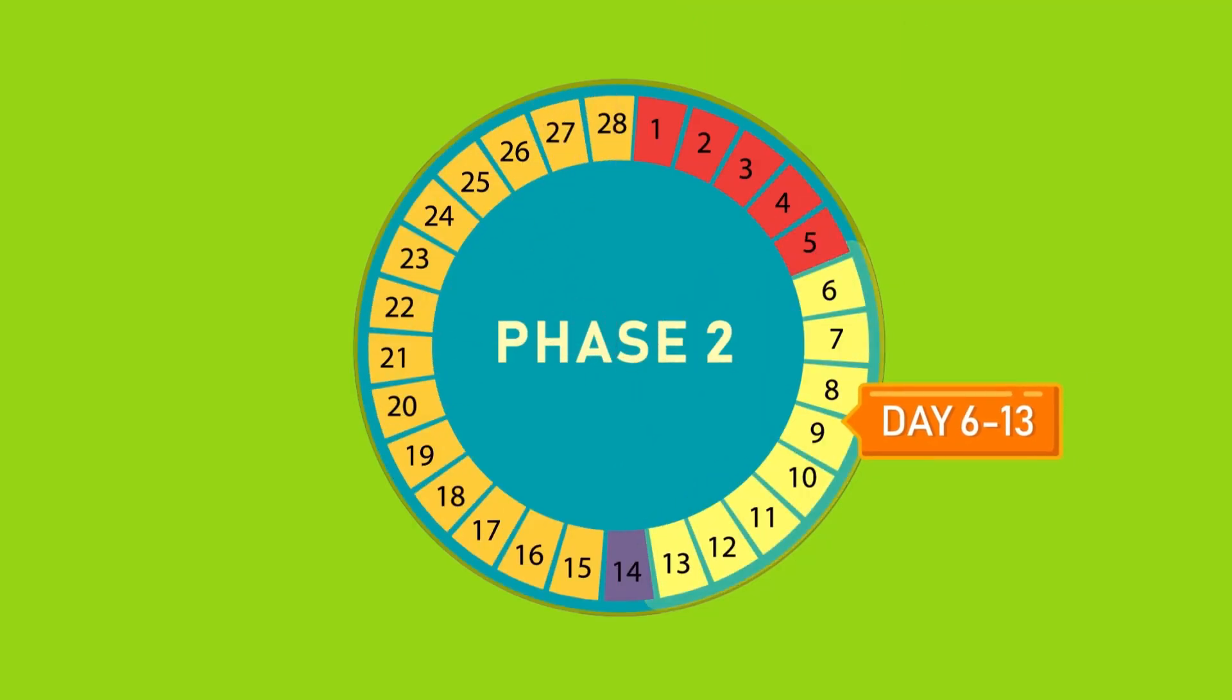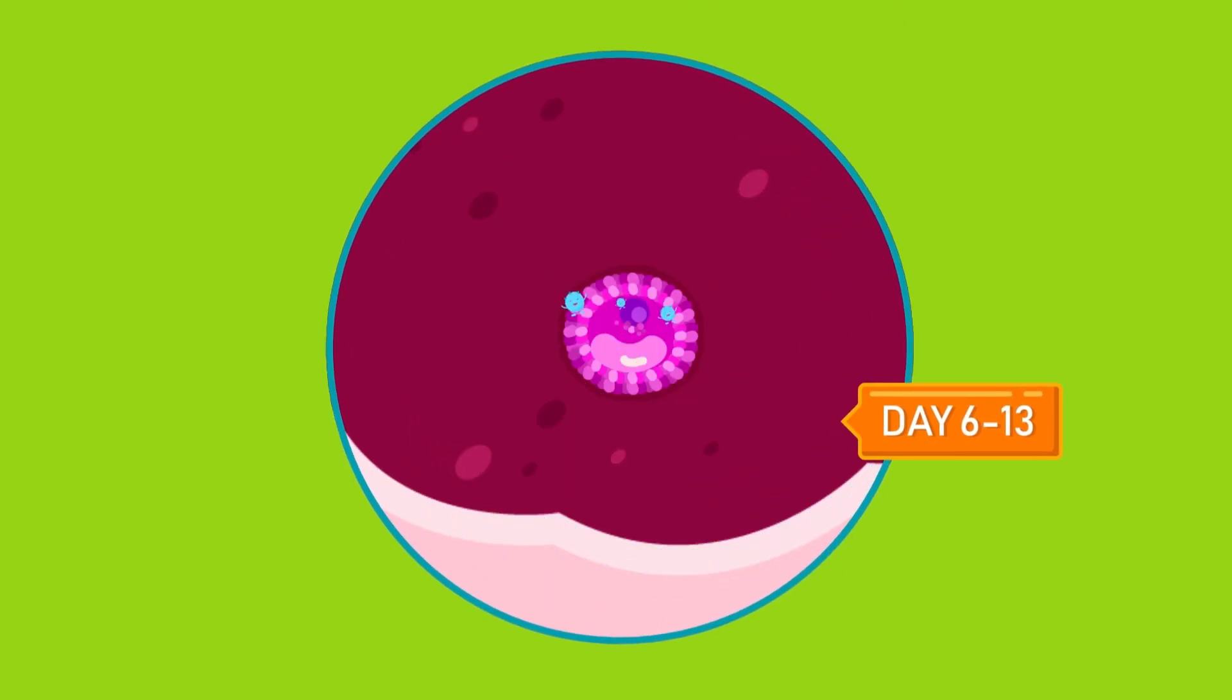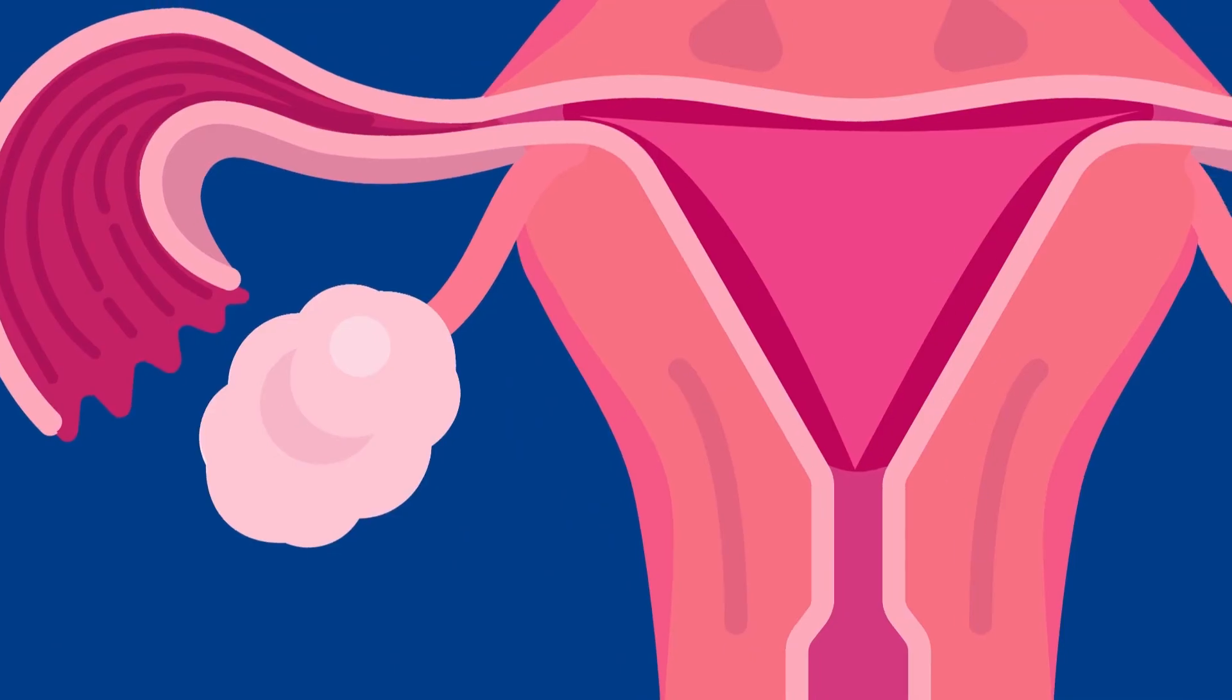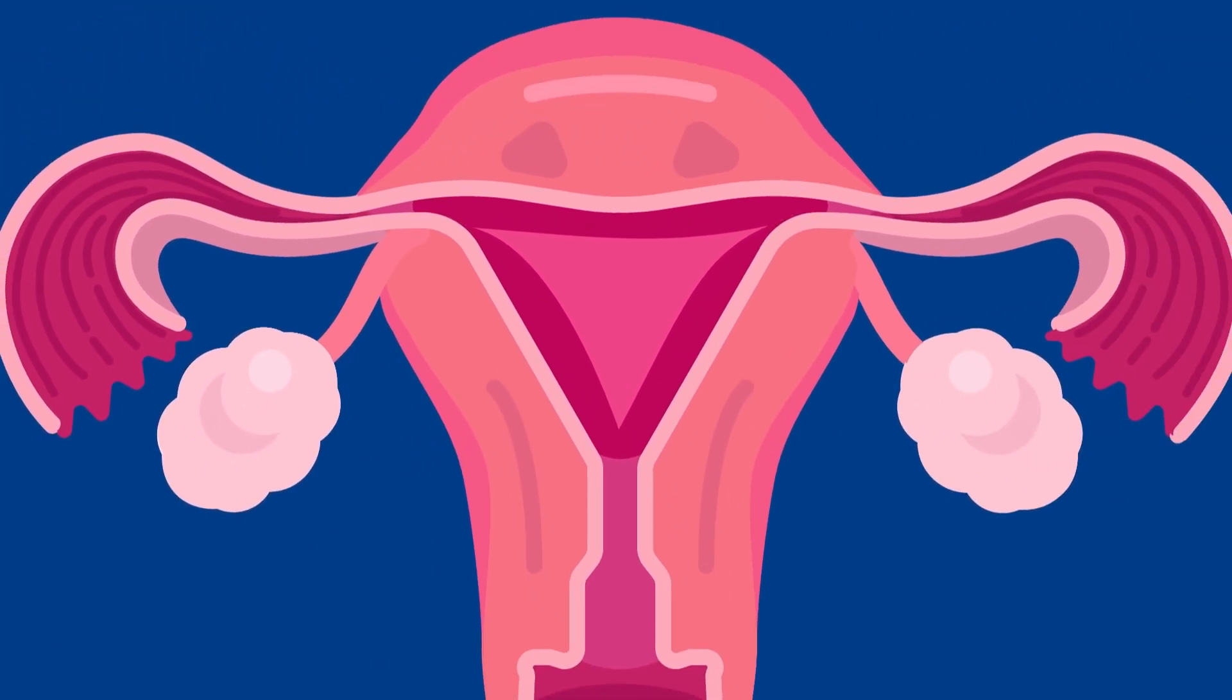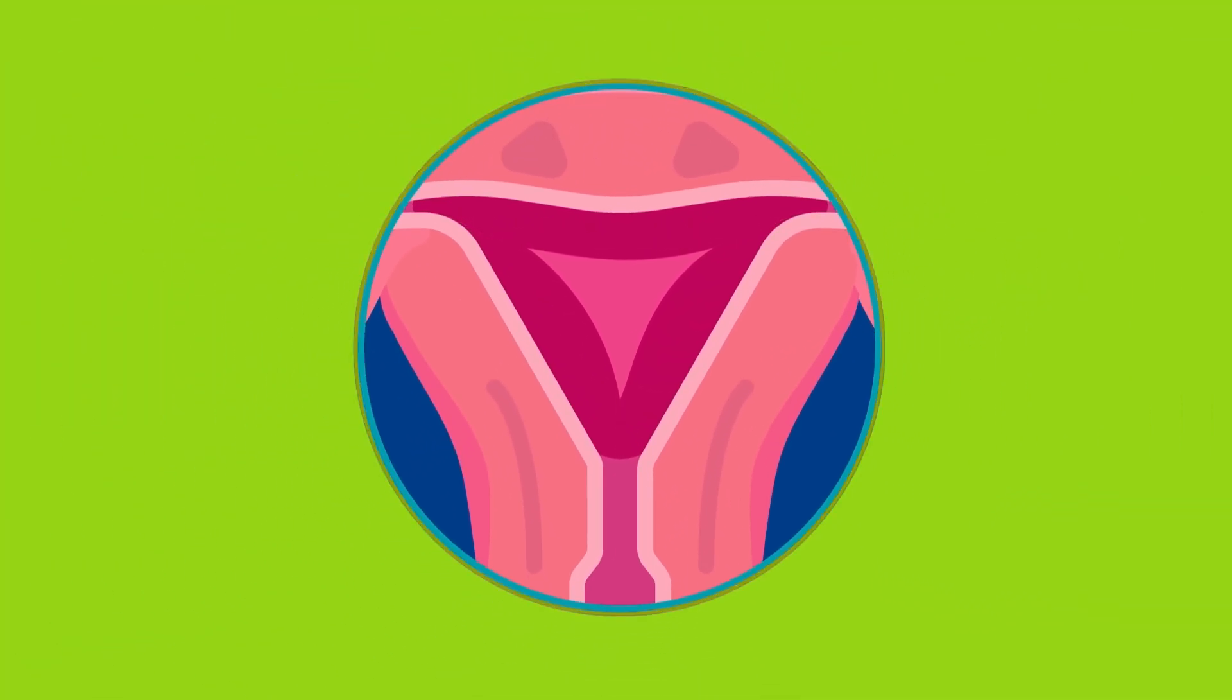Day 6 to 13, Phase 2. The ovaries secrete estrogen, which starts the repair and growth of the endometrium. Endometrium becomes thicker and bleeding stops completely.